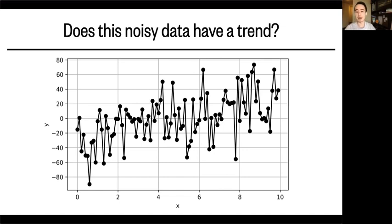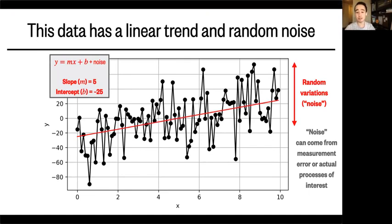So you have some data. In this case, the data does have a trend. And by a trend, I'm talking about a linear relationship between x and y. In other words, a slope. In fact, this noisy data here can be well described as simply a line with a slope of 5 and a y-intercept of negative 25. And superimposed on that line have been some random variations that I added. We consider these noise. Now noise in data can come from things like measurement error, such as if your sensor is not really accurate. Or it can also come from real processes of interest, like weather in the atmosphere, or ocean eddies, or randomness in biological growth, just to name a few examples.